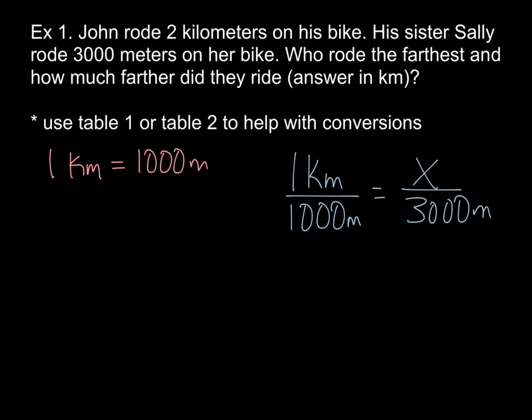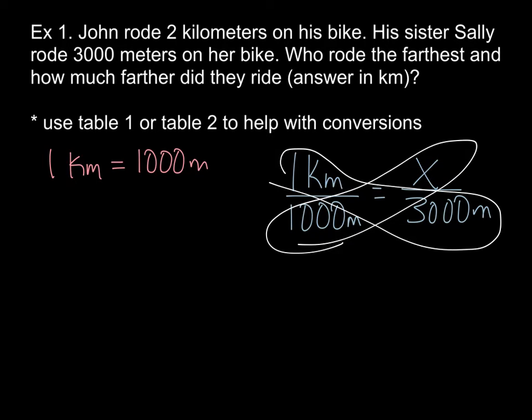All right. So I went ahead and I wrote down the conversion. So we know one kilometer is equal to 1,000 meters. And then I made the actual proportion. One kilometer over 1,000 meters equals X, because we don't know how many kilometers, over 3,000 meters. So I get it, a lot of you could look at this and go, okay, I know 1,000 times 3 equals 3,000. So 1 times 3 would equal 3 kilometers.